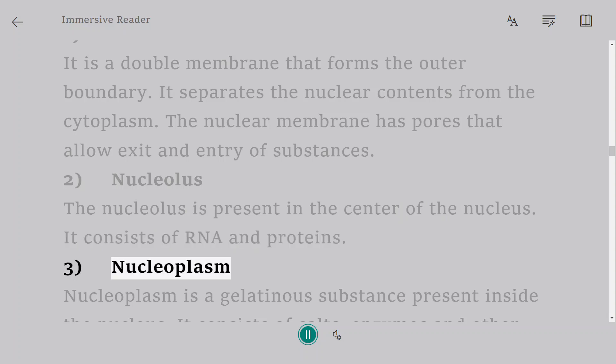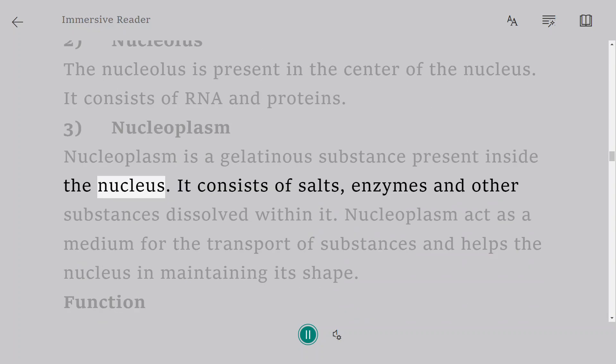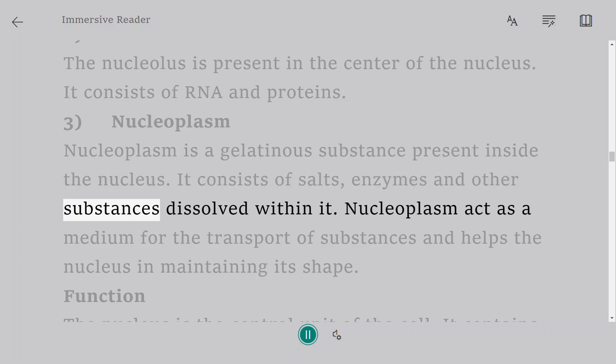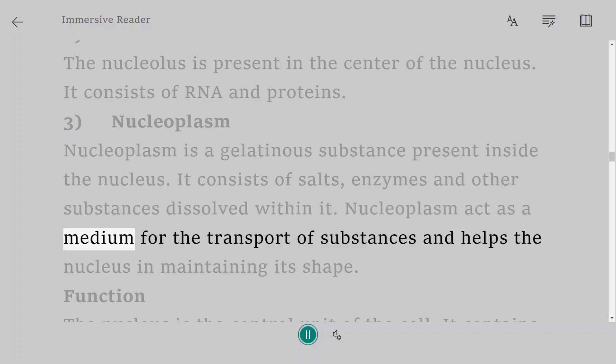3. Nucleoplasm. Nucleoplasm is a gelatinous substance present inside the nucleus. It consists of salts, enzymes and other substances dissolved within it. Nucleoplasm act as a medium for the transport of substances and helps the nucleus in maintaining its shape.